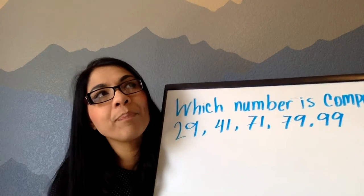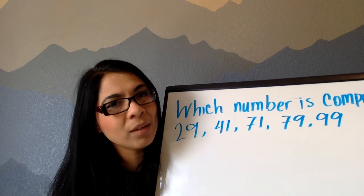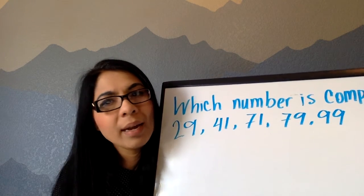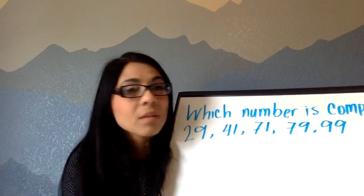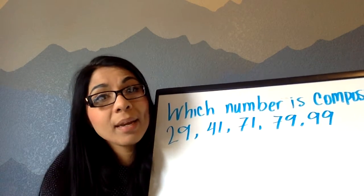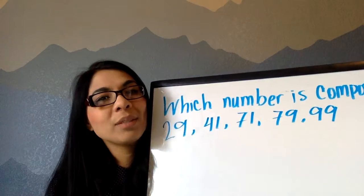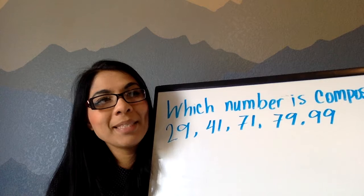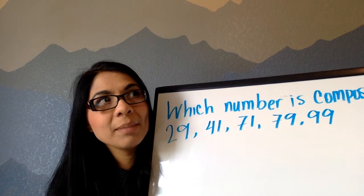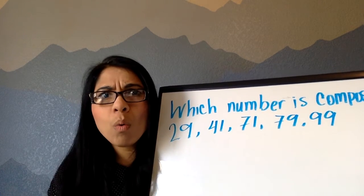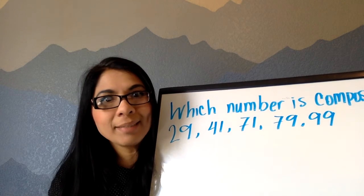How about 71? If I divide it by 3, I will have a remainder, so I don't think so. How about 79? Even though it ends on 9, 10 times 7 is 70, and 10 times 11 is... wait, that doesn't work either. So I can't go — I'm done.